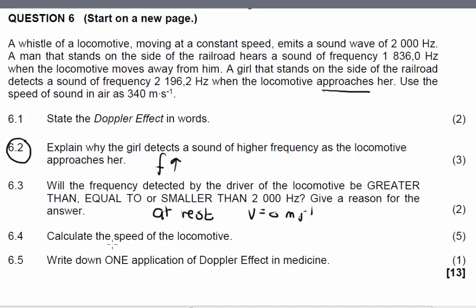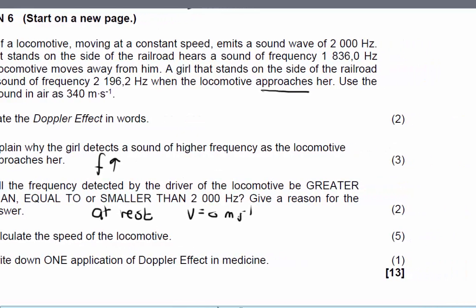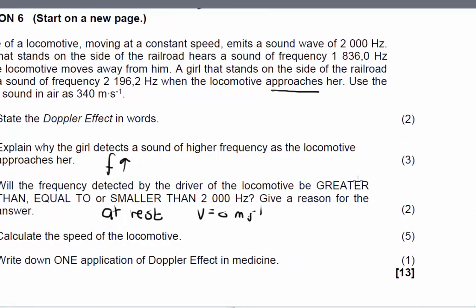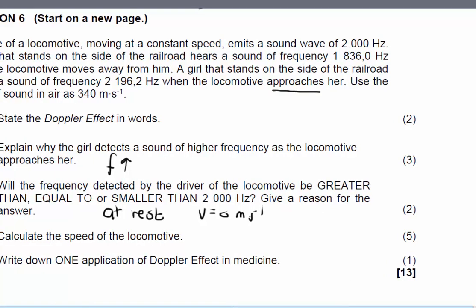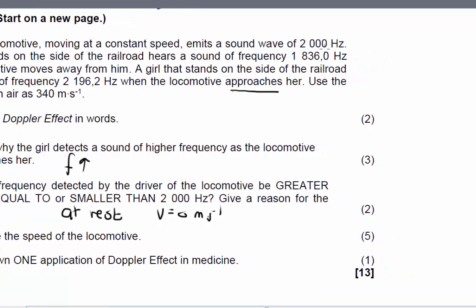For question 6.4, calculate the speed of the locomotive. Here we're going to have to use Doppler's formula. Remember, when you use Doppler's formula, you have to write it as it is given on your formula sheet. The frequency of the listener equals V plus minus VL over V plus minus Vs, and all of this will be multiplied with the frequency of the source. So one mark will go for that.